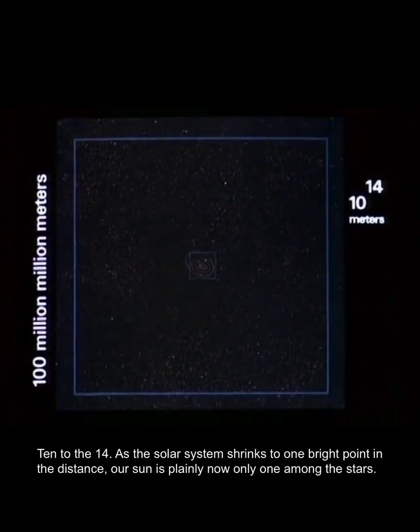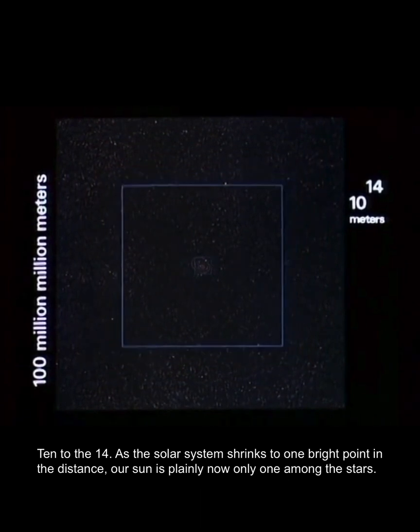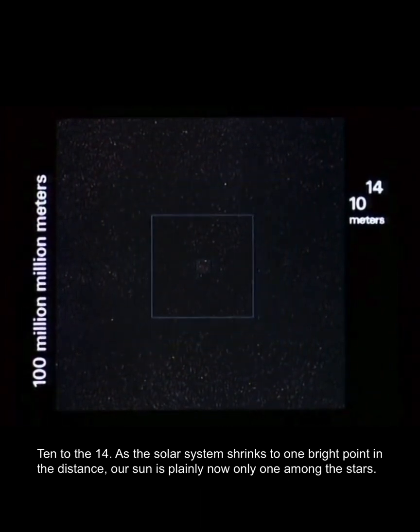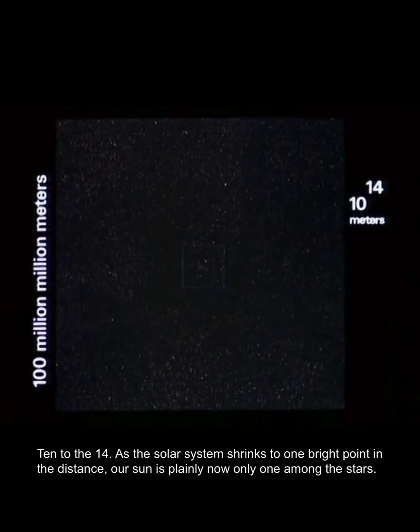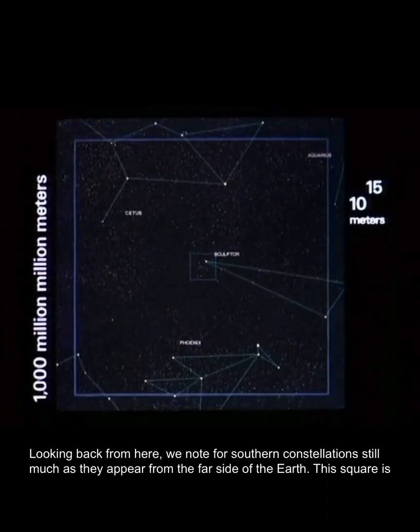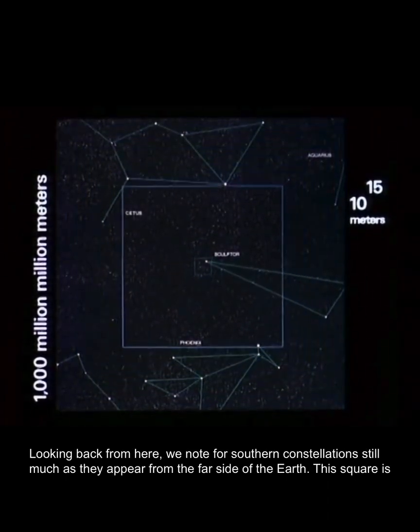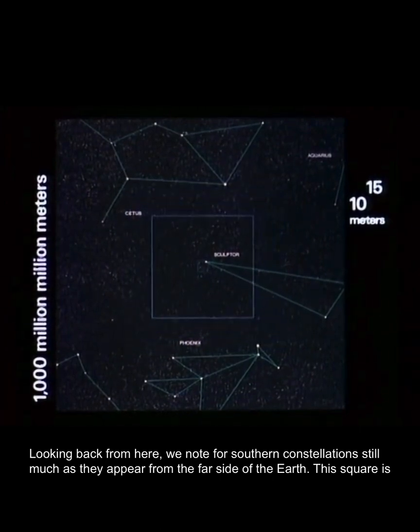10 to the 14th. As the solar system shrinks to one bright point in the distance, our sun is plainly now only one of the stars. Looking back from here, we note the southern constellations still much as they appear from the far side of the Earth.